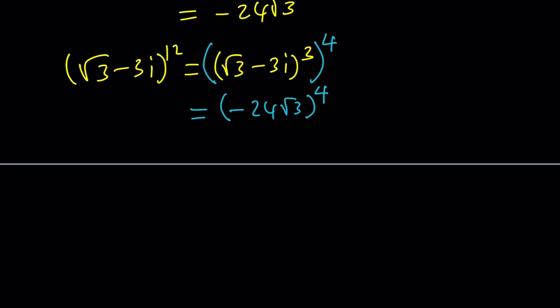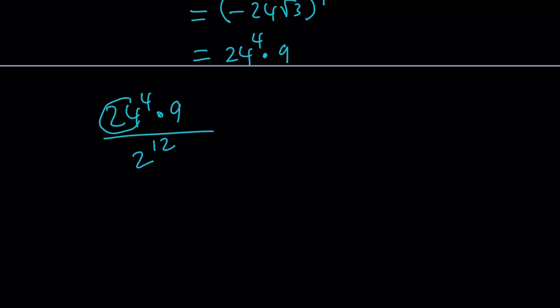Now we can kind of write this as 24 to the fourth power. And square root of 3 to the fourth power. Square root of 3 squared is 3. 3 squared is 9. So that's what we're going to get from there. And now I'm going to go ahead and divide that by 2 to the power 12. Right? And we can kind of do a little bit of prime factorization here. 24 is 2 to the third times 3 to the first. If you raise everything to the fourth power here. You're going to get 2 to the 12th. And then 3 to the fourth. And then 9 is 3 squared. And then this is going to be 2 to the power 12. Awesome.